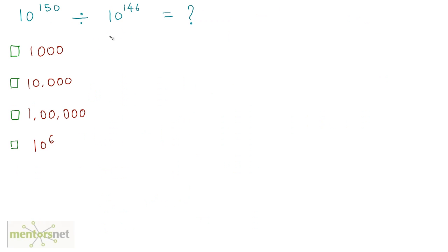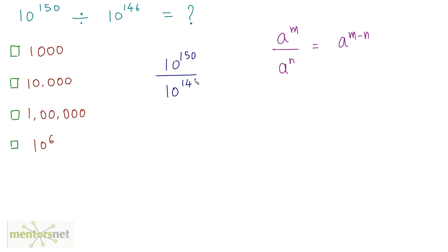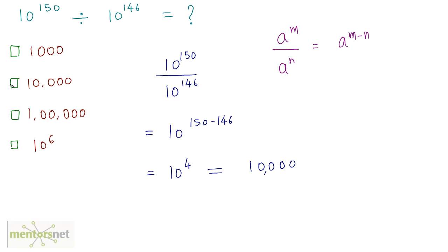This next one is an easy question. Using the law a raised to m divided by a raised to n equals a raised to m minus n, we write the expression as 10 raised to 150 divided by 10 raised to 146. This equals 10 raised to 150 minus 146, which is 10 raised to 4 — that is 1 followed by 4 zeros, so 10,000 is the right answer.